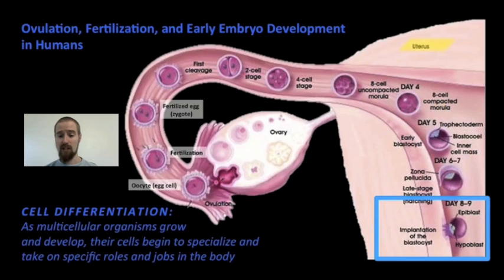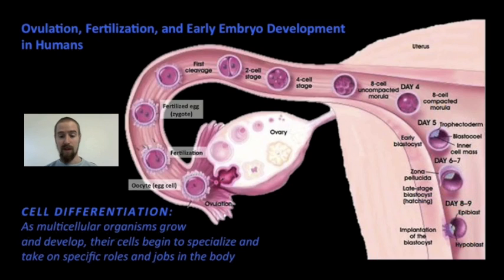However, all of the specialized cells that make up our bodies — our muscle cells, nerve cells, skin cells, bone cells, blood cells, and so forth — all descended from an embryo just like this. So how do our cells come to take on these specialized roles? How do muscle cells become muscle cells, and what keeps them from becoming nerve cells? That's what today's video is all about.